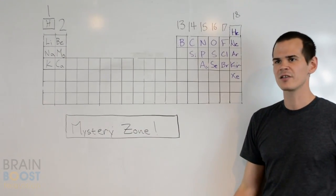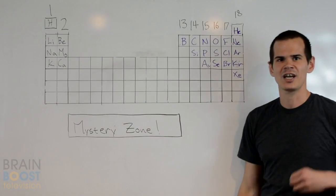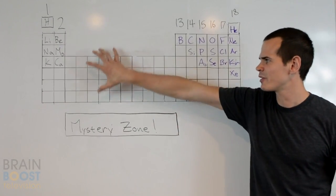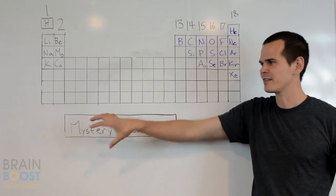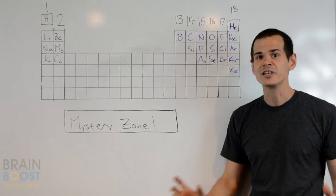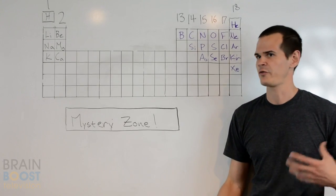The only exception to this rule is helium, which has two instead of eight. All the other ones follow it. Now, as for the ones in the middle, the transition metals and the lanthanides and actinides, they follow stranger rules. And the good news is you never need to know about their valence electrons for the provincial.